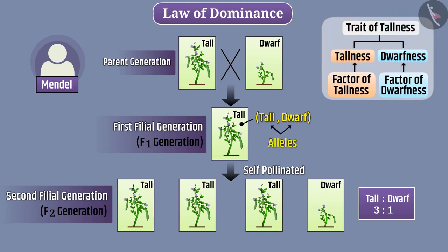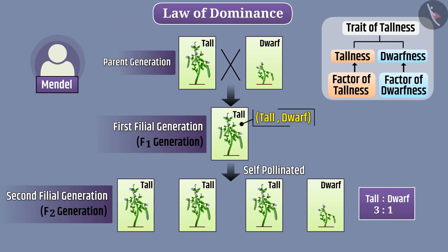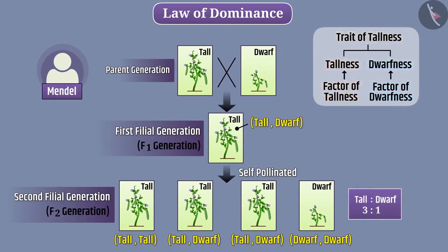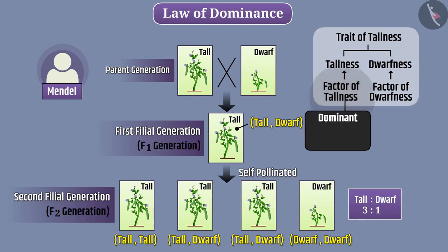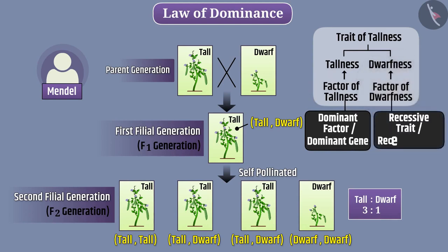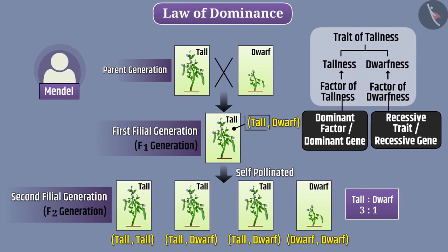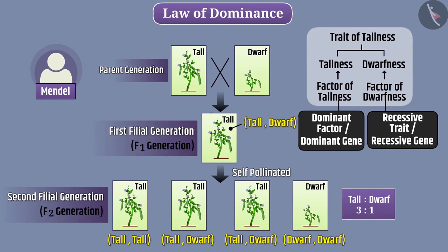There are different forms of a trait, so the factors of that trait also have different forms — these are called alleles. The allele is a pair of factors, which may be similar or different. If in the pair of factors the two alleles are different, then only one of the factors is allowed to get expressed. The factor that gets expressed is called the dominant factor or dominant gene, while the factor that remains idle is called the recessive trait or recessive gene. Only one copy of the dominant factor ensures expression of the dominant character, while for expression of the recessive trait, both factors in the pair must be recessive.